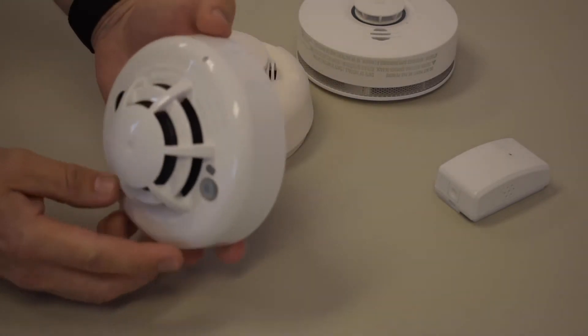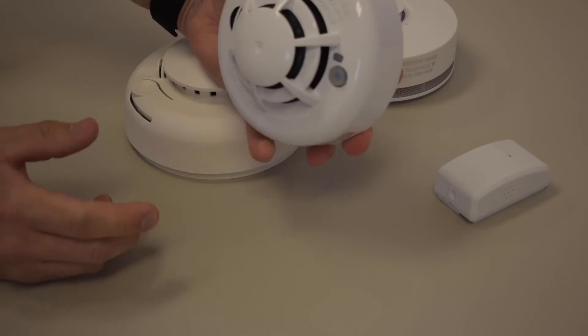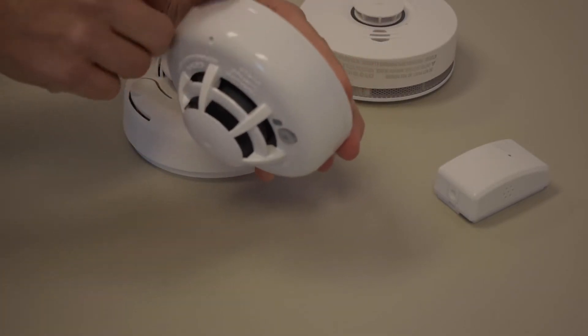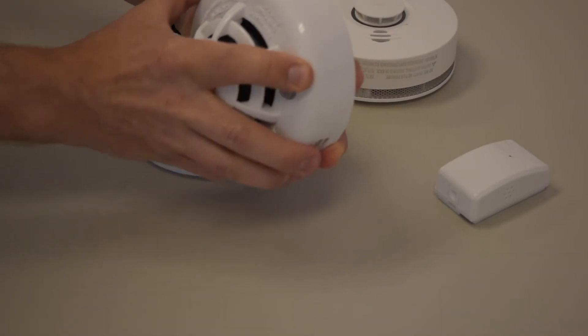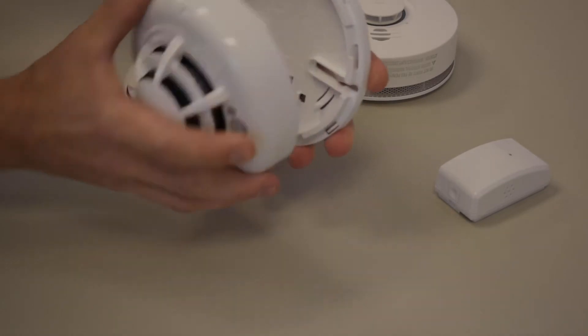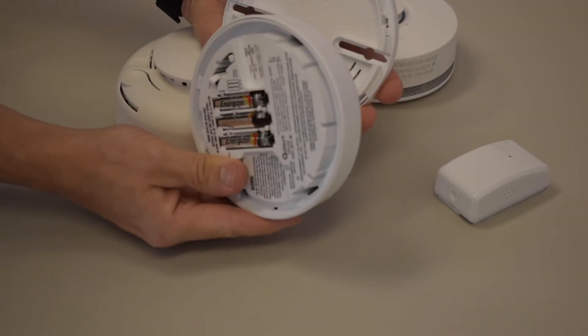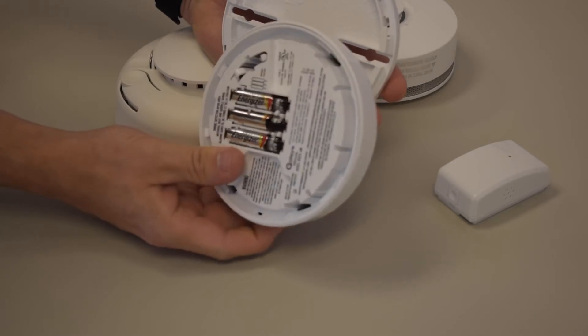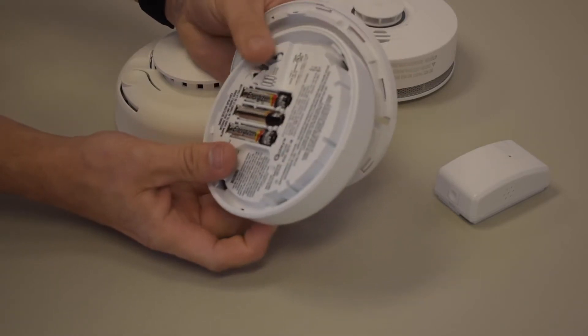This is a Qolsys smoke detector; however, the carbon monoxide detector looks somewhat similar. The two tabs do line up counterclockwise to unlock, and there are three AAA batteries that can be popped out and replaced.